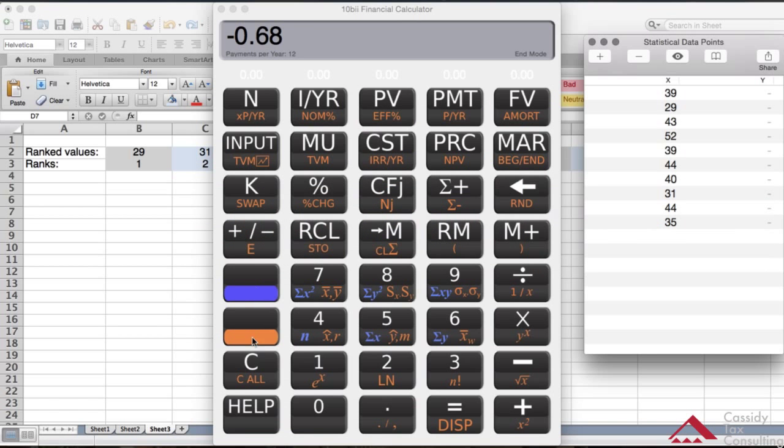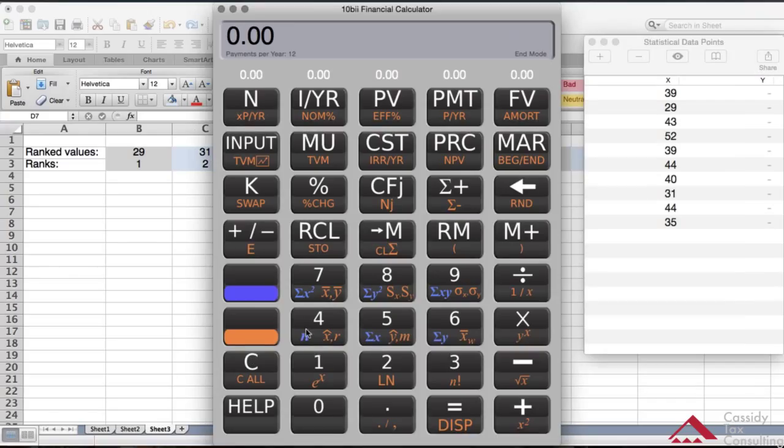To get the quartile, let me clear this. We know what n is, so we can get n here fairly quickly. Hit the blue key, hit n. So it's going to be 10 plus 1, then equals, then divide that by 4. So divide by 4 equals 2.75.